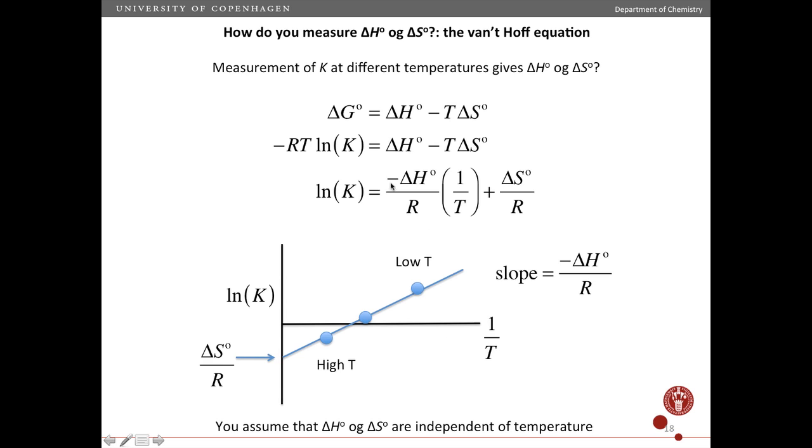The slope of this line is minus ΔH° divided by R, and the intercept, when 1 over T is 0, will give me the standard entropy change divided by R. So I make the plot, and then I read off the enthalpy change from the slope and the entropy change from the intercept.